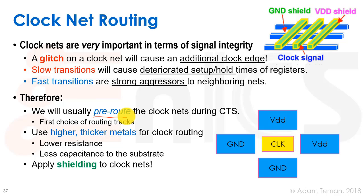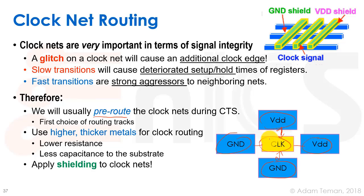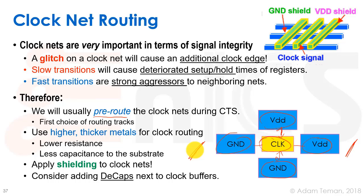Next, we may apply clock shielding. For example, if we take a clock net, we can put shields of VDD and ground on all sides. Usually we'll do it on the sides because we can have more interlayer dielectric up and down, and we don't necessarily have to do it on top and bottom. This ensures that any signals routed on the sides will not disrupt the clock signal. We'll do this mainly on the larger, more major clock nets.